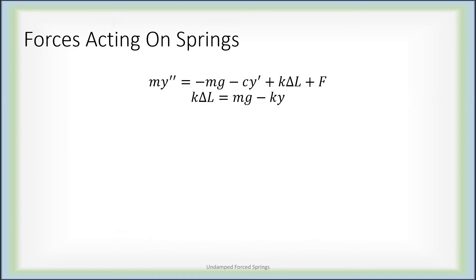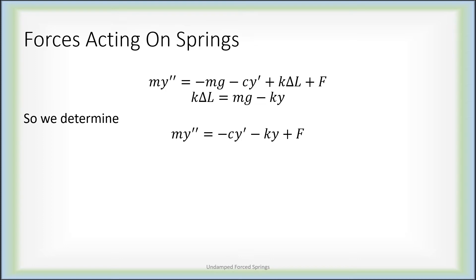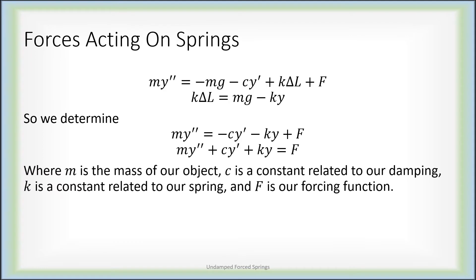The force acting on our object is the sum of gravity, damping, the spring, and the forcing function. We've determined that the spring force k times delta capital L equals mg minus ky, where y is the displacement from equilibrium. Therefore the mg terms cancel, and my double prime equals negative cy prime minus ky plus F. Rearranging, we have a recognizable second-order linear differential equation: m is the mass, c is a damping constant, k is a spring constant, and capital F is a forcing function — a second-order linear ODE with constant coefficients.